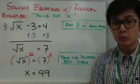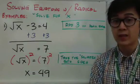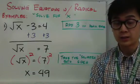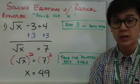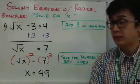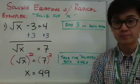The first step is to get rid of negative 3. To get rid of negative 3, you add 3 on both sides, and you will be left with square root of x equal to 7.